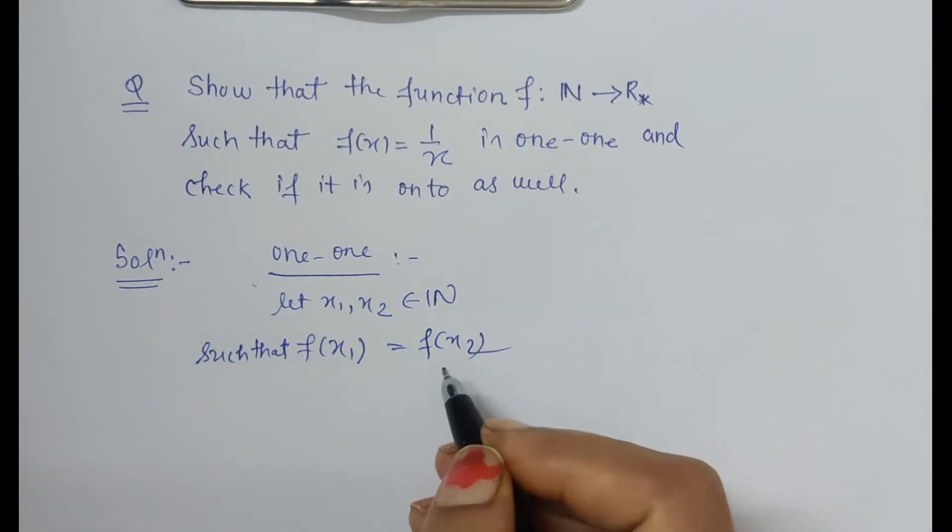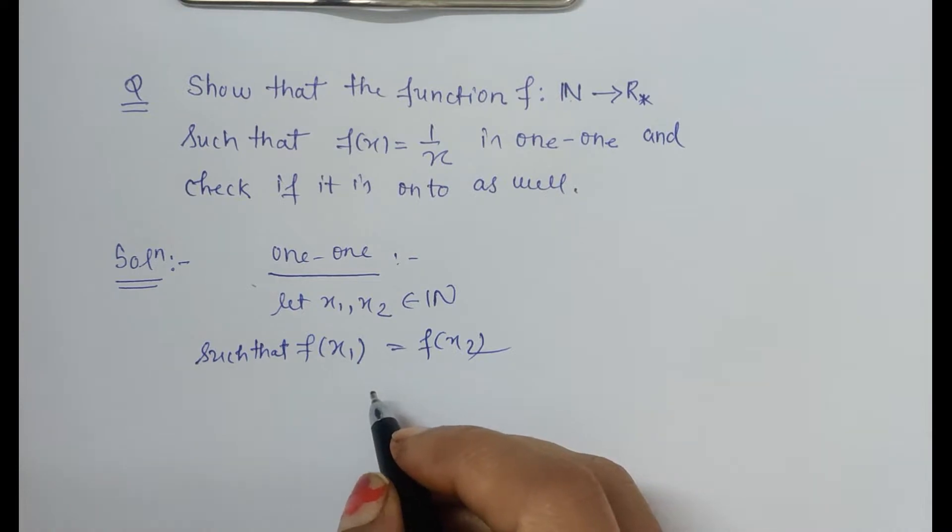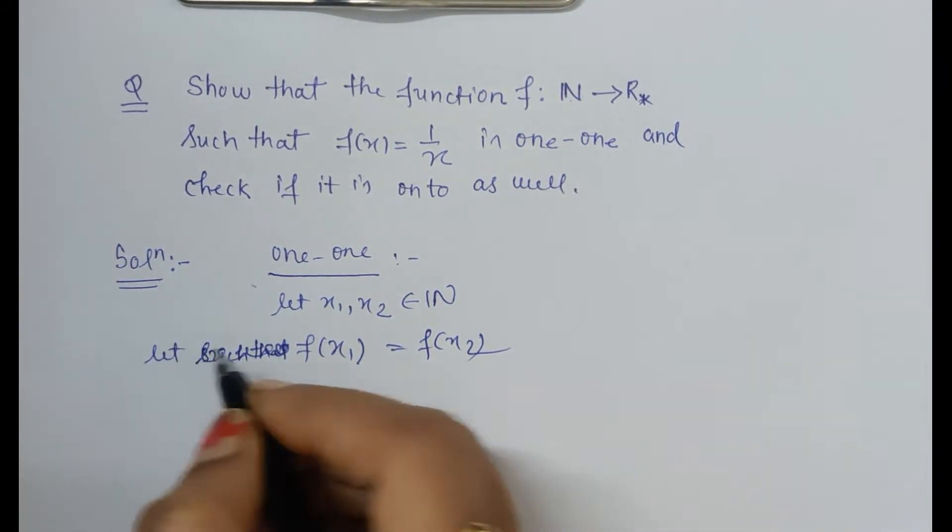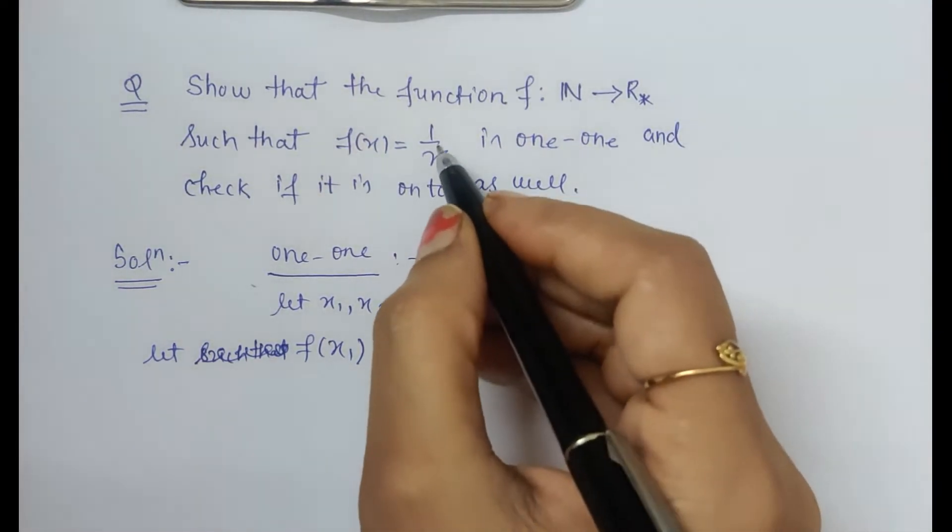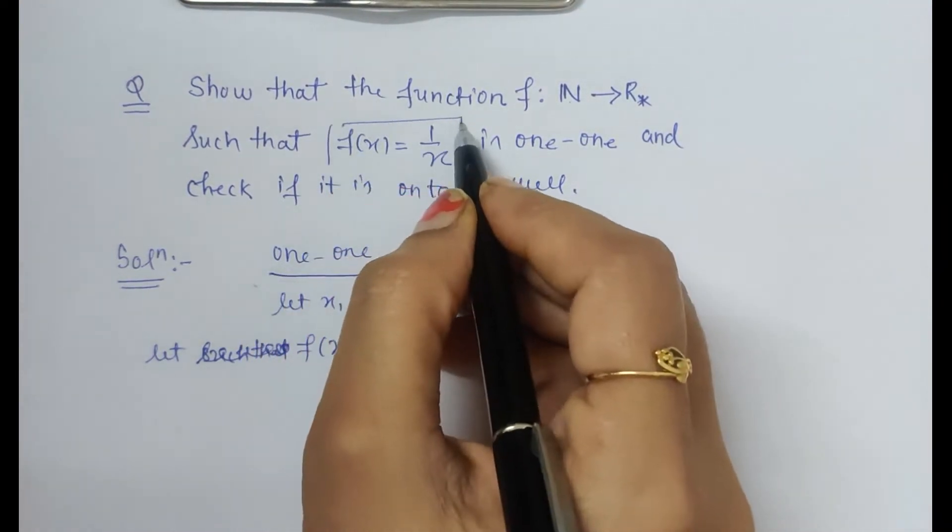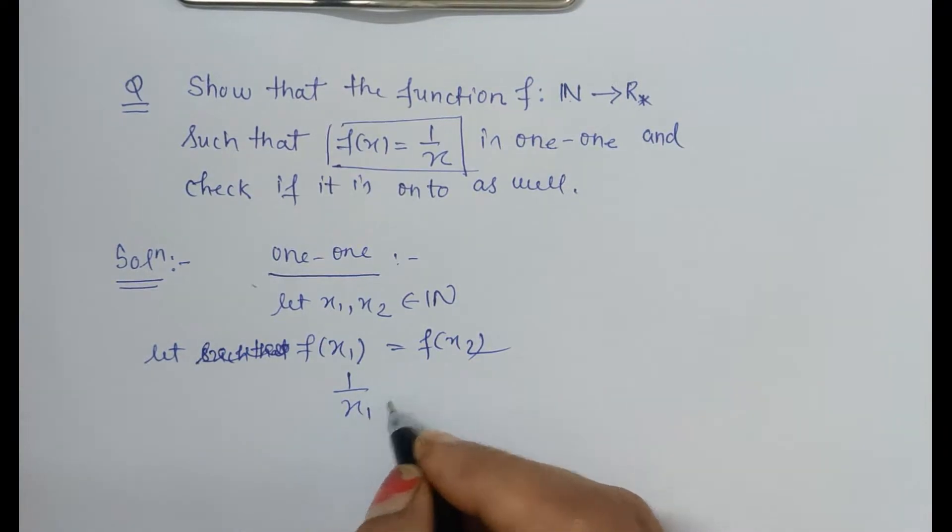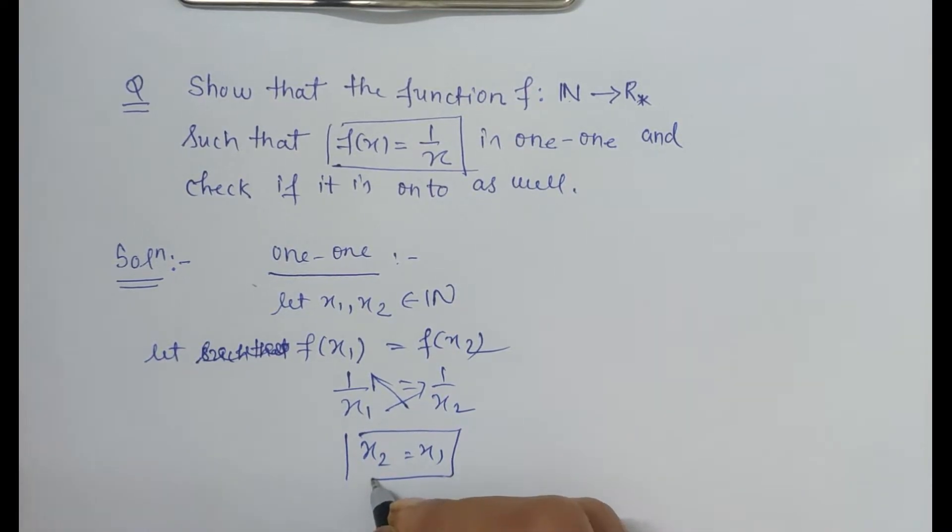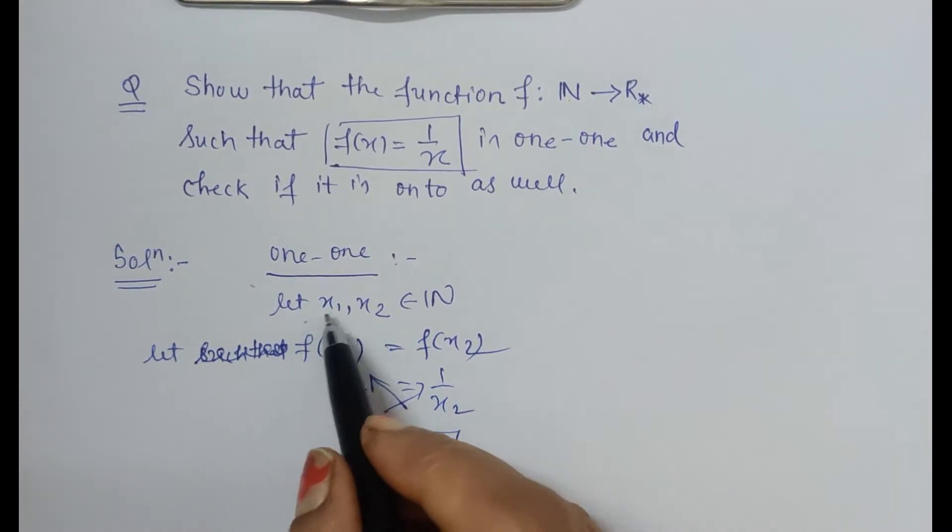Let f(x1) equal f(x2). What does it mean? As per the question, f(x) is 1/x, so this will be 1/x1 equals 1/x2. Now when we cross multiply, we get x2 equals x1.